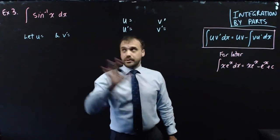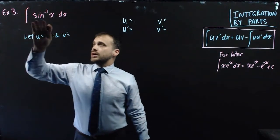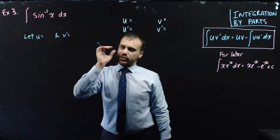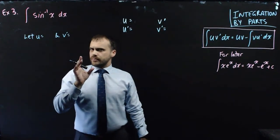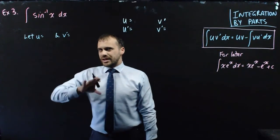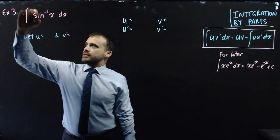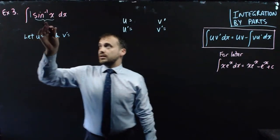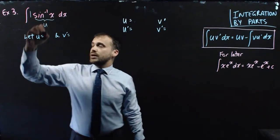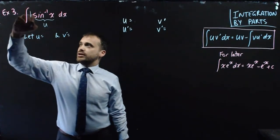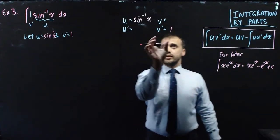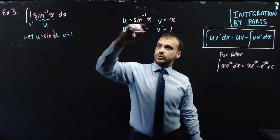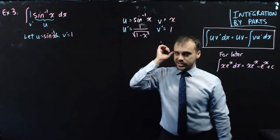This next one's not going to feel like integration by parts when you first look at it: the integral of arcsin x with respect to x. You might think, wait, it's not a product of functions — how am I going to do this? There's always an extra function lurking in there, and if it's useful we can use it. What I mean is we can always see there's a 1 out the front. So I'm going to let arcsin x be my u and that 1 be my v'. That gives me v equal to x, and u' equal to 1 over the square root of 1 minus x² — that's an identity you should know.